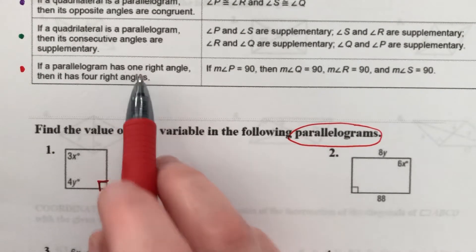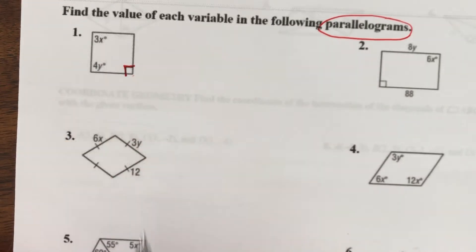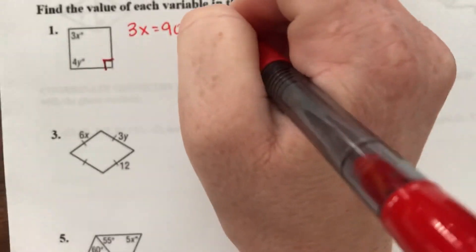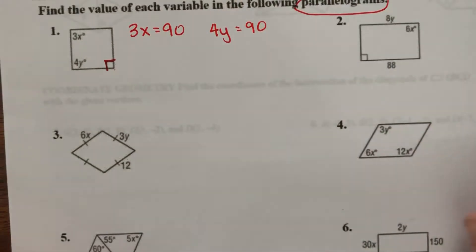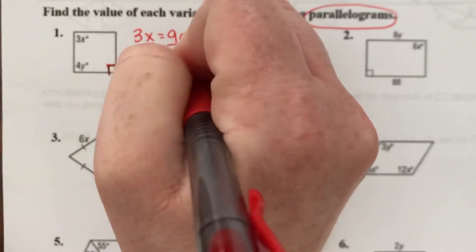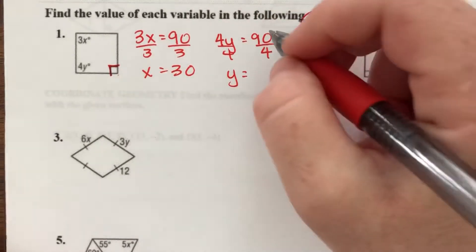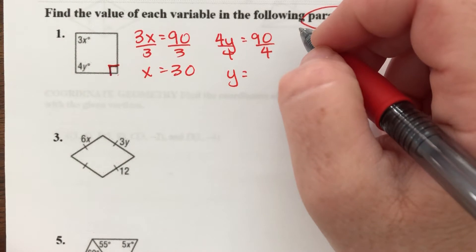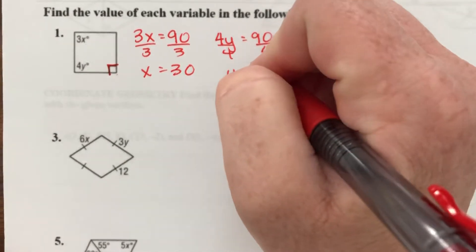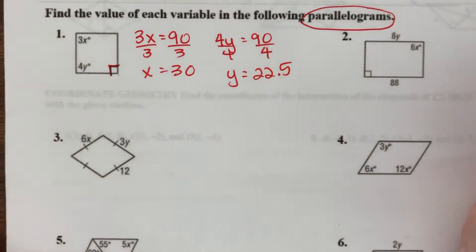So based on that bottom rule here, if one of the angles is right, they're all right. If one of these is 90 degrees, they're each 90. So 3x equals 90, and 4y equals 90. And I can solve for both of those. Divide by 3, x equals 30. 4y equals 90, divide by 2, y equals 22.5.